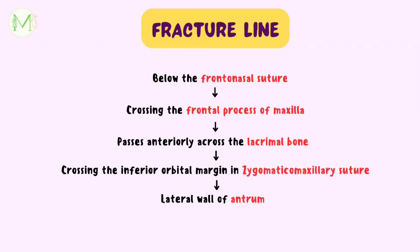The fracture line of Lefort II Fracture runs below the frontonasal suture on either side, crossing the frontal process of the maxilla, and passes anteriorly across the lacrimal bones immediately anterior to the nasolacrimal canal. From this point, the fracture line passes downward, forward, and laterally, crossing the inferior orbital margin in the region of the zygomaticomaxillary suture. It may or may not involve the infraorbital foramen.